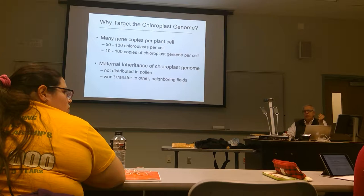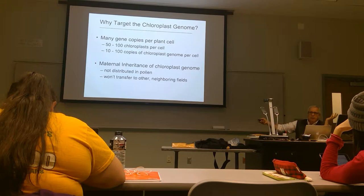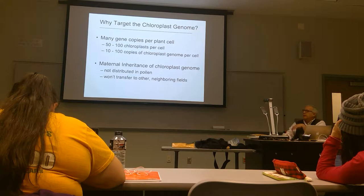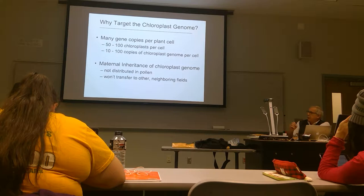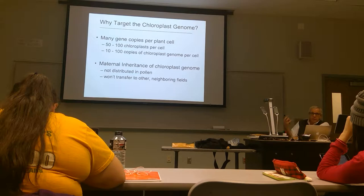The second important reason is one of the drawbacks of putting your gene in the plant genome: it ends up in both the pollen and the egg. Pollen can be distributed widely, but if it's in the chloroplast, for most crop plants the pollen doesn't contain chloroplasts. Some pines or firs do have chloroplasts in pollen, but if you're concerned about distribution of your transgene, putting it in the chloroplast genome — because of its maternal inheritance — means your transgene will only be passed on from the mother through the egg. It won't be distributed in pollen, so it won't spread to other farmers' fields.